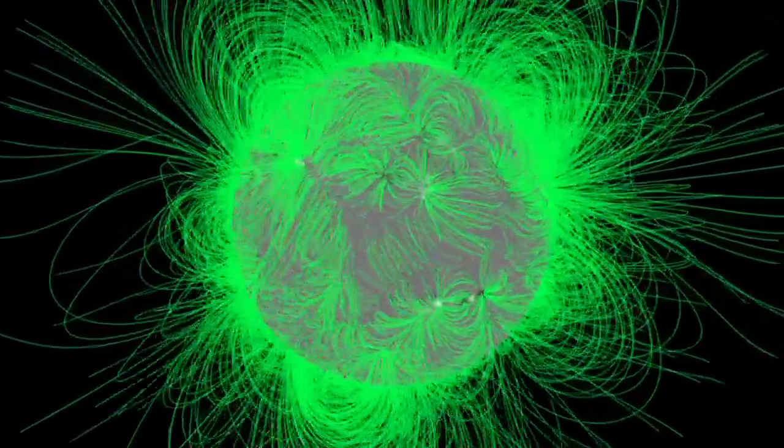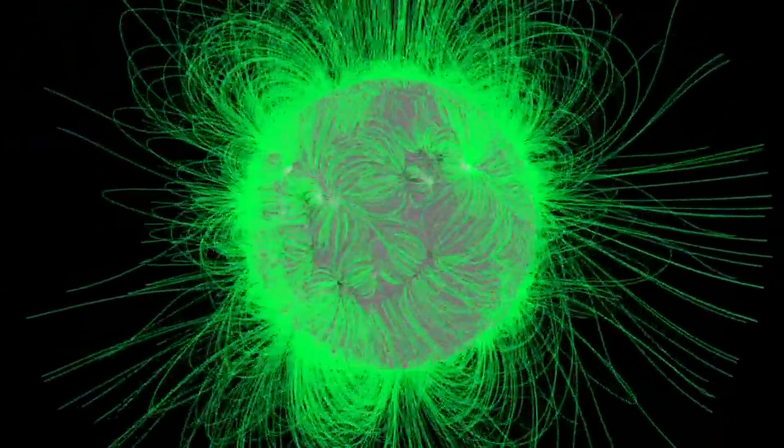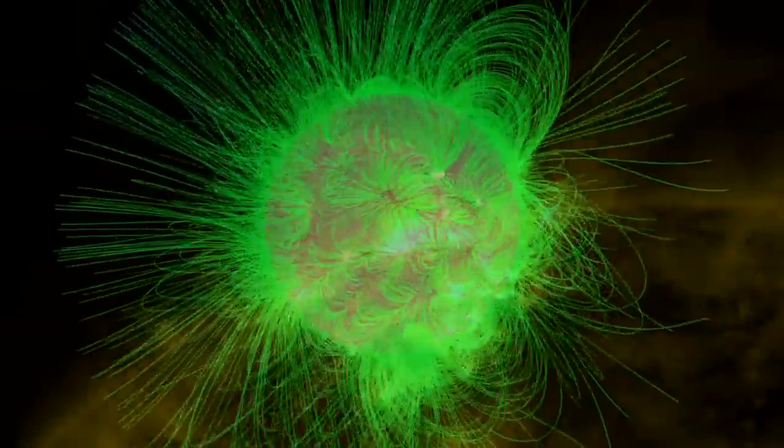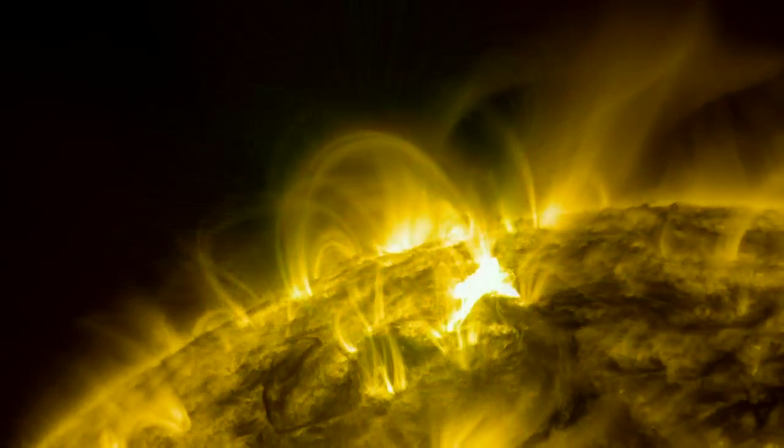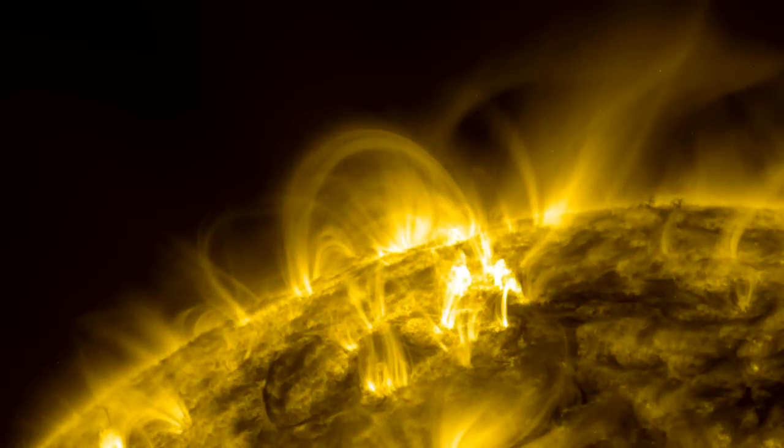While we cannot see magnetic field lines, NASA's SDO can observe solar particles that move along them, tracing out giant arcades of magnetic loops on the Sun's surface.